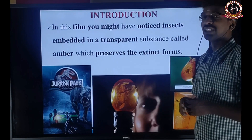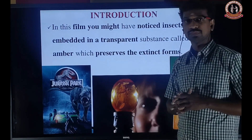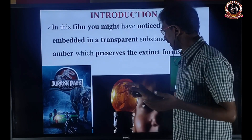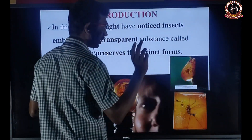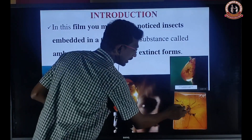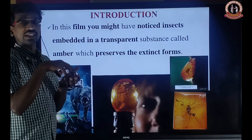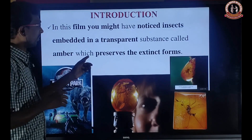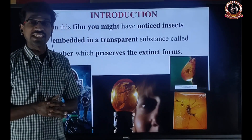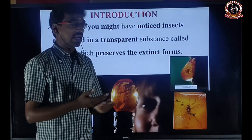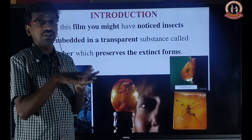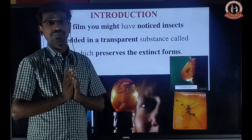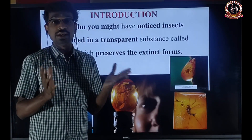In this film, you might have noticed that the insect is embedded in a transparent substance. That transparent substance is called Amber. If you have not watched this film, you can see this clip. You can clearly see that this is the transparent substance. In the transparent substance, the preserved insects are found. This is clearly shown in this Jurassic Park clip. This is called Amber, which preserves the remains of extinct life forms. Extinct means totally eradicated from the world, but this animal is still present preserved in that Amber, because the Amber is not degraded by any other biological activity.